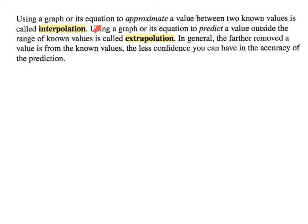Next. Using a graph or its equation to approximate a value between two known values is called interpolation. Using a graph or its equation to predict a value outside the range of known values is called extrapolation. Interpolation is approximating something within stuff you already know. Extrapolation is to predict something past what you don't know, outside of the range of values. In general, the farther removed a value is from the known values, the less confidence you have in the accuracy of the prediction.